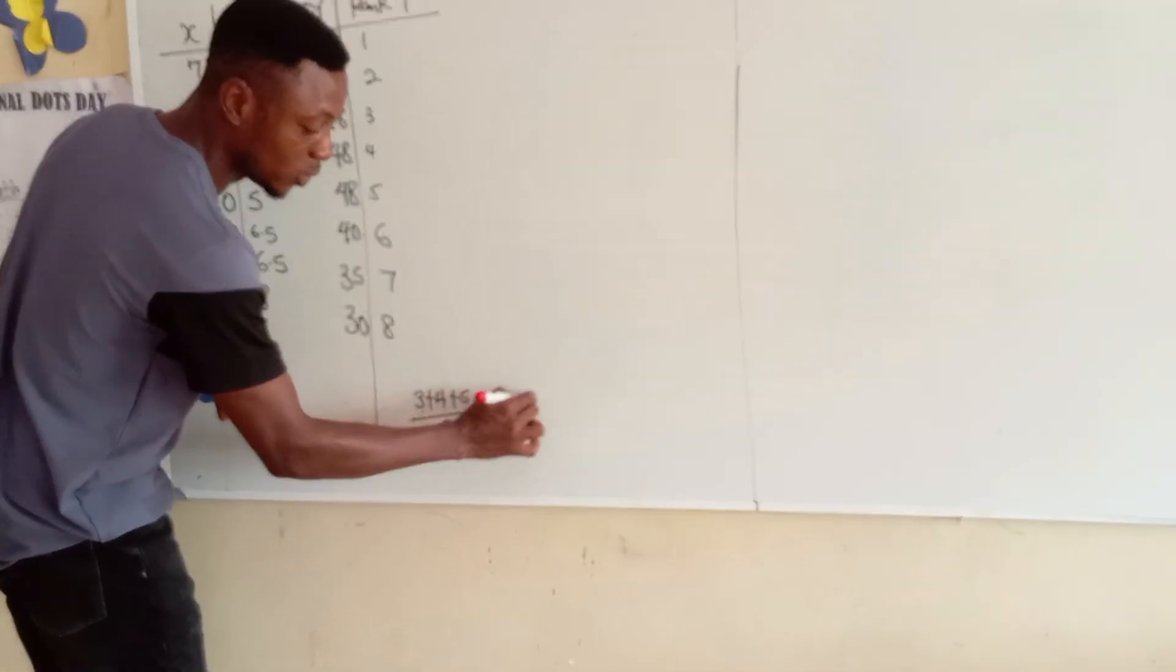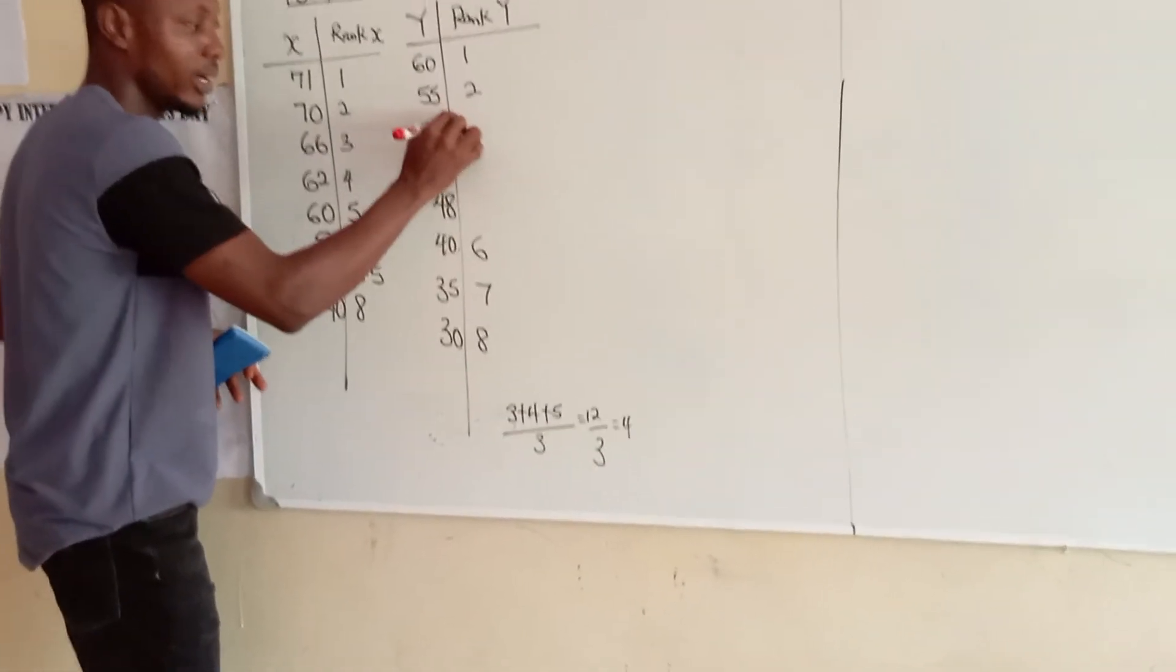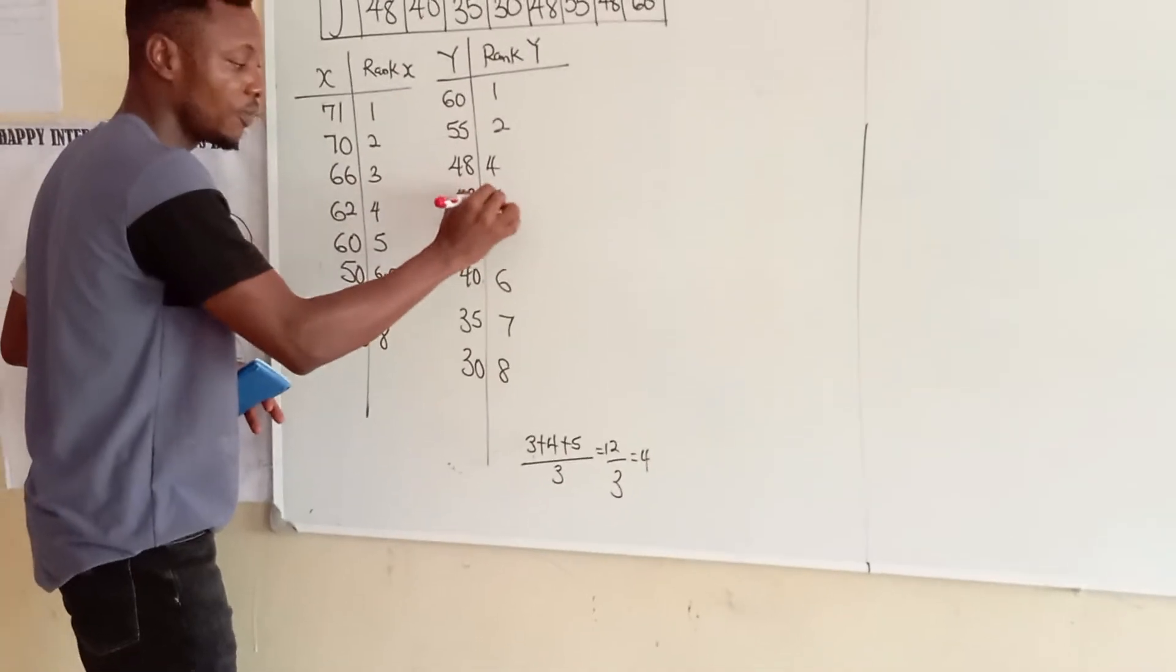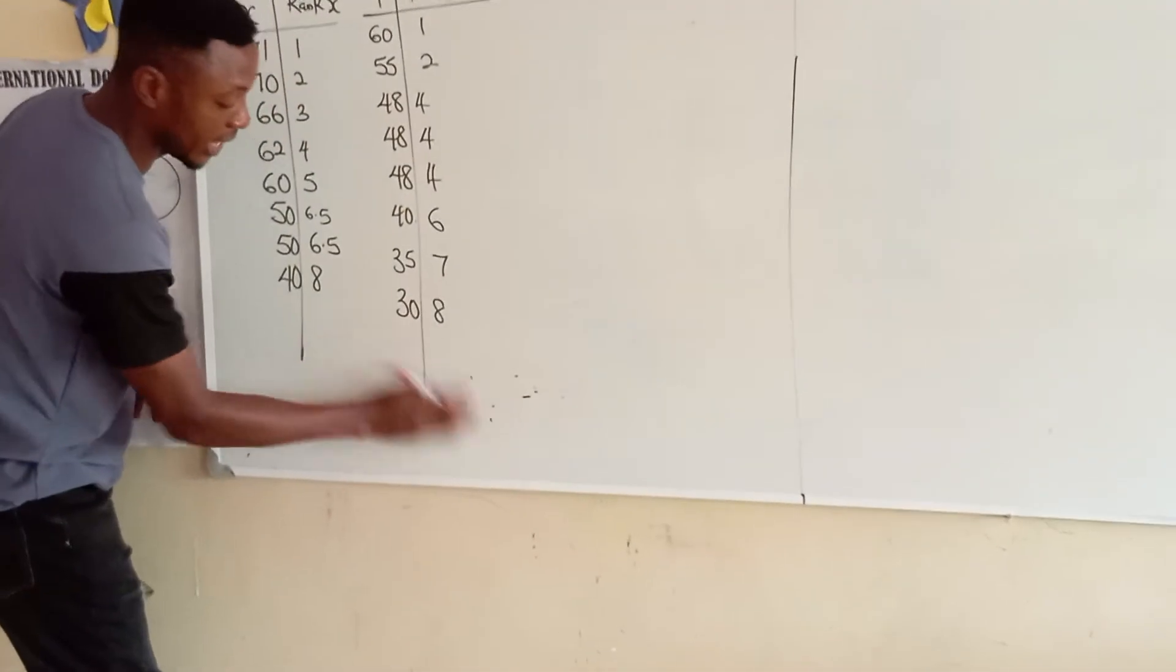We have 3 plus 4 plus 5, divided by the total number of sums, which is 3. 3 plus 4 is 7, plus 5 is 12. If we divide that by 3, it will give us 4. So, I'm going to remove this rank here, and this will be 4. This is 4. This is 4.